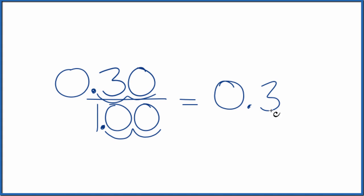You could call it 0.30, which is the same thing as 0.3, which is what we found before. So the fraction 30 one-hundredths is equal to the decimal 0.3.